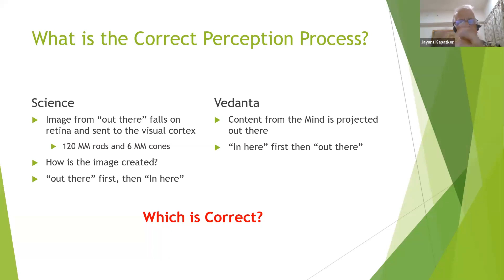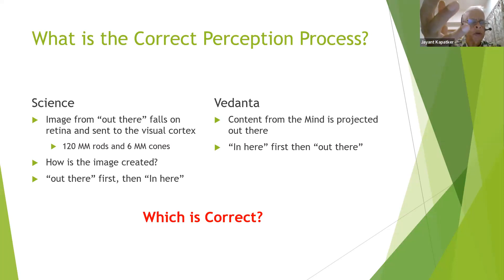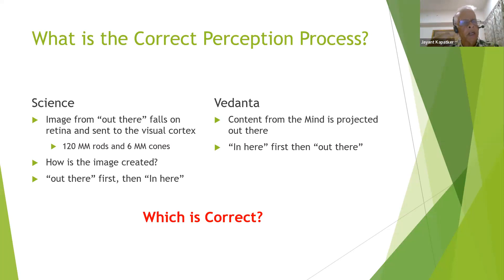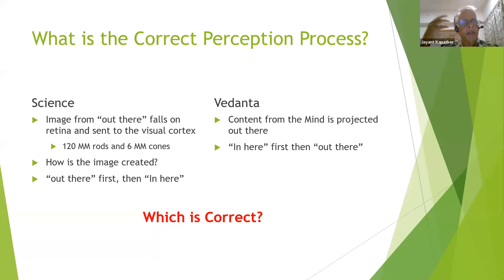Vedanta teaches there is content in the mind and this content from the mind is projected out there. Science is teaching there's a universe out there and the image from the universe comes into your visual cortex, and then you see inside. Vedanta teaches a completely different philosophy — there's already a fully functioning universe within your mind and that is projected outward. So which is correct? We'll try to answer this question in this webinar.